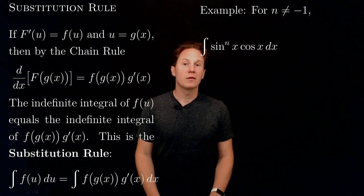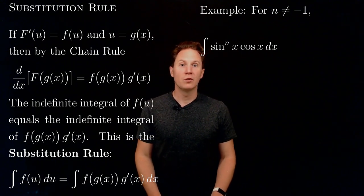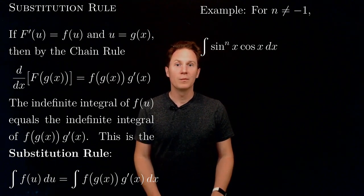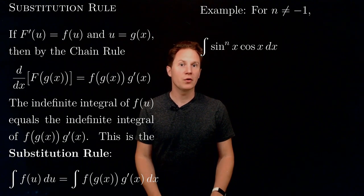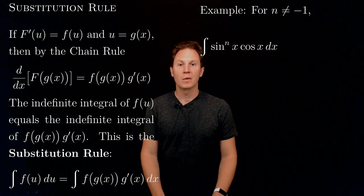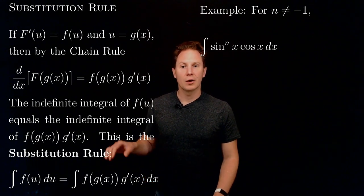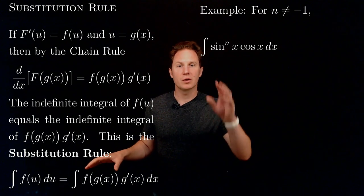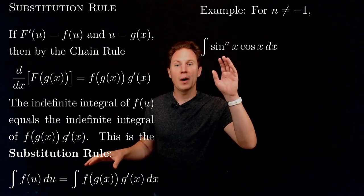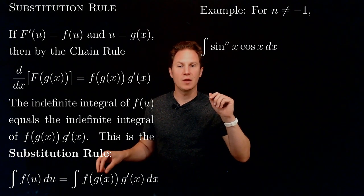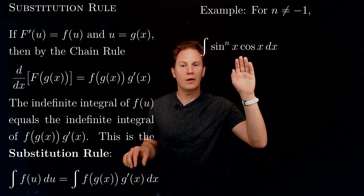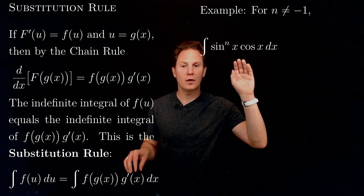Let's take an integer n not equal to negative 1 and consider the indefinite integral of sin^n(x) times cos(x) dx. Here you see a composition of functions: the outer function is the nth power, the inner function is the sine function, and you see as a factor the derivative of the sine function.